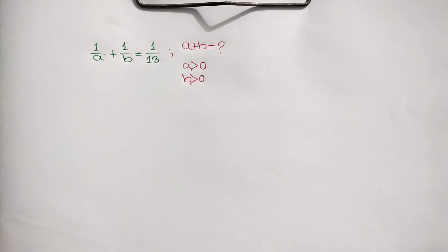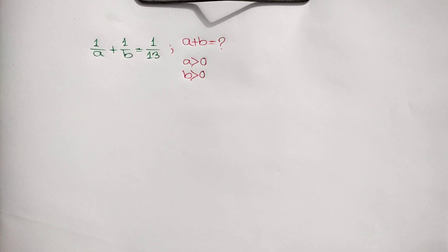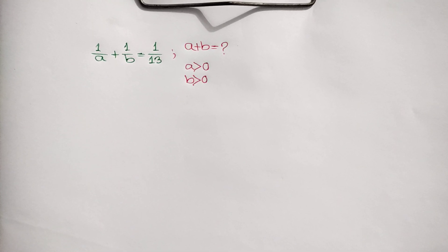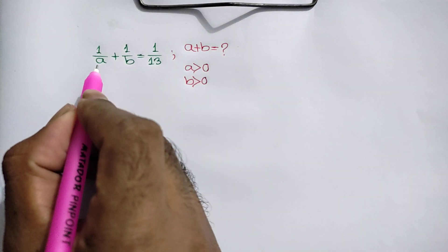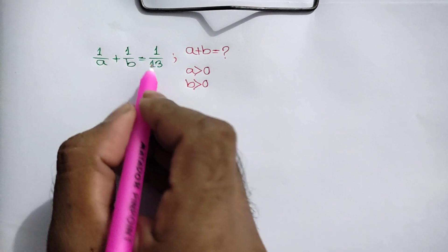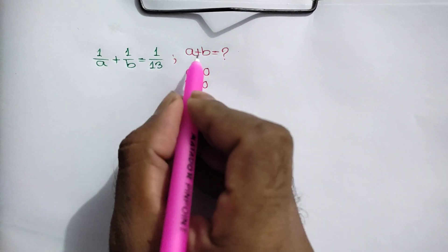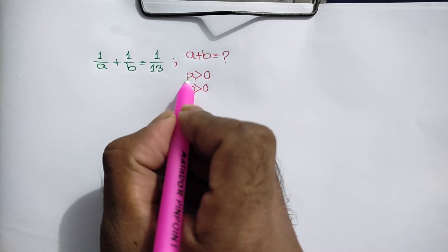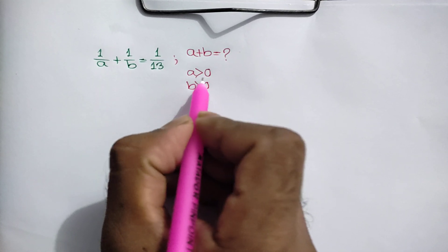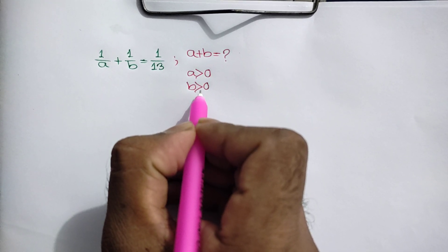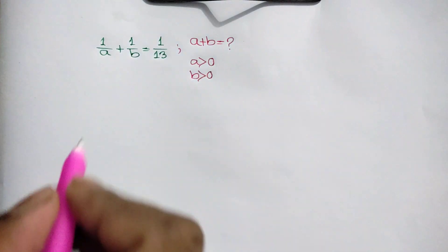Hi everyone. In this video I am going to show how to solve this math olympiad problem: 1 over a plus 1 over b is equal to 1 over 13. A plus b is equal to what? Where a is greater than 0 and b is also greater than 0.